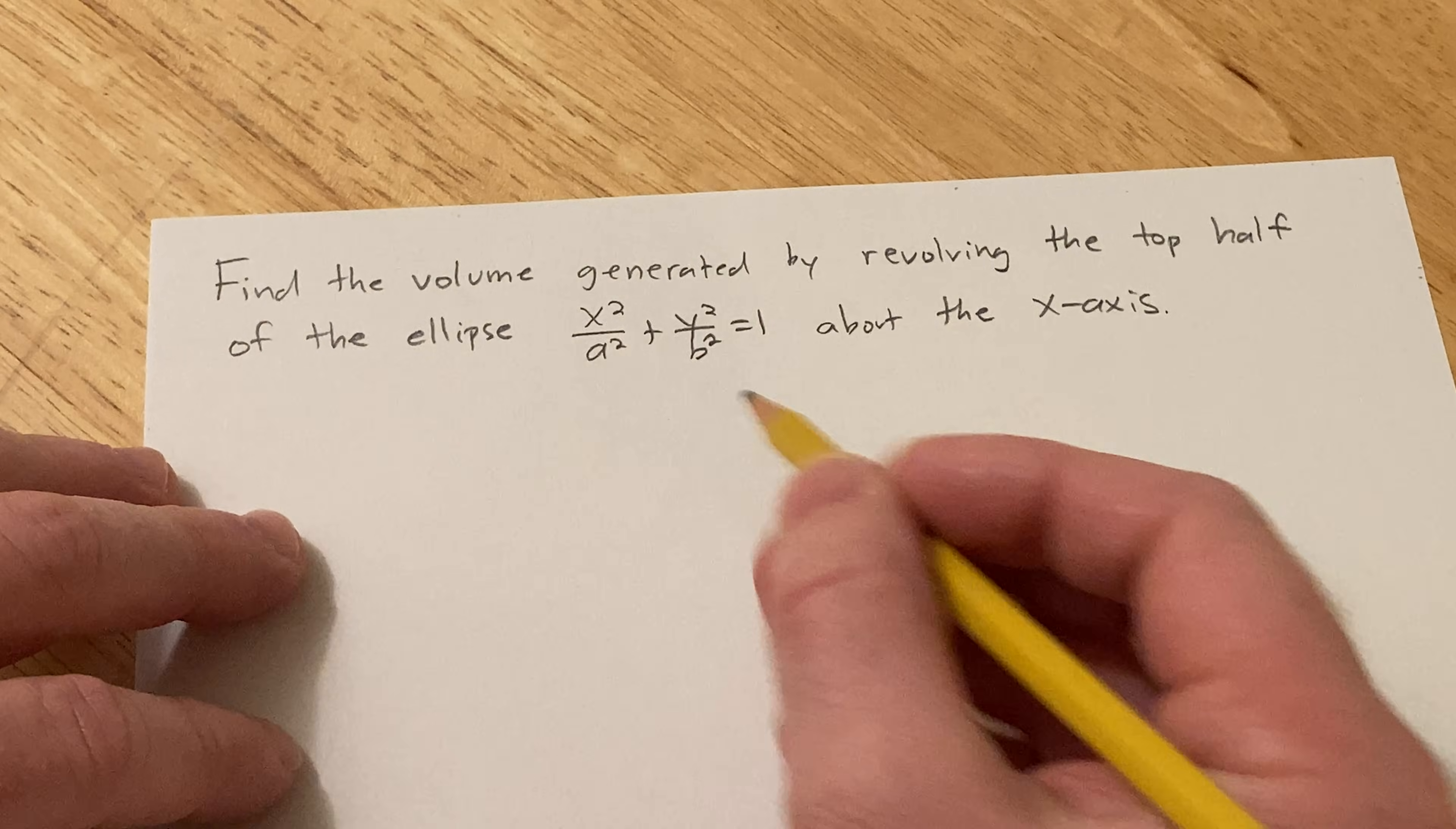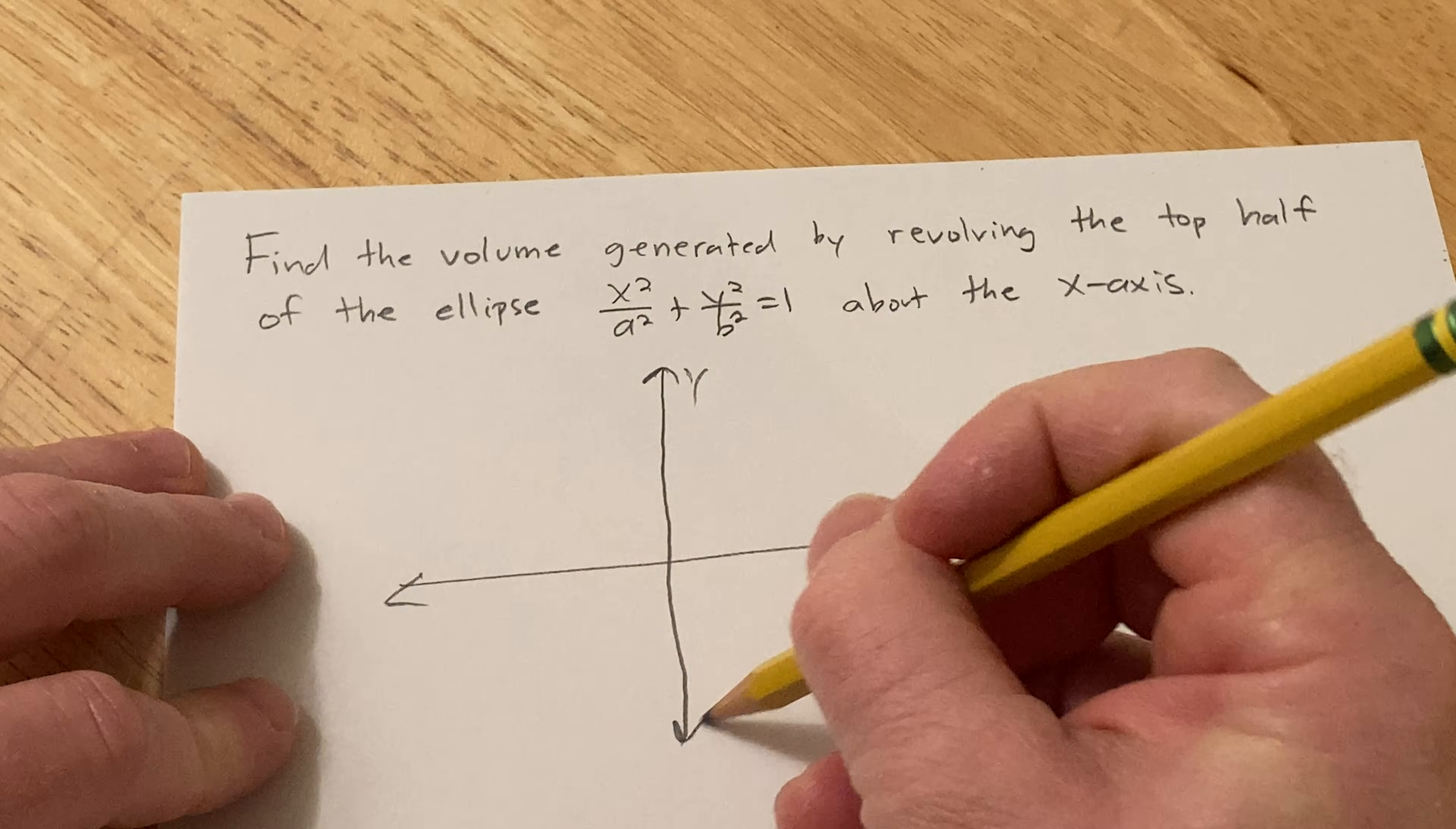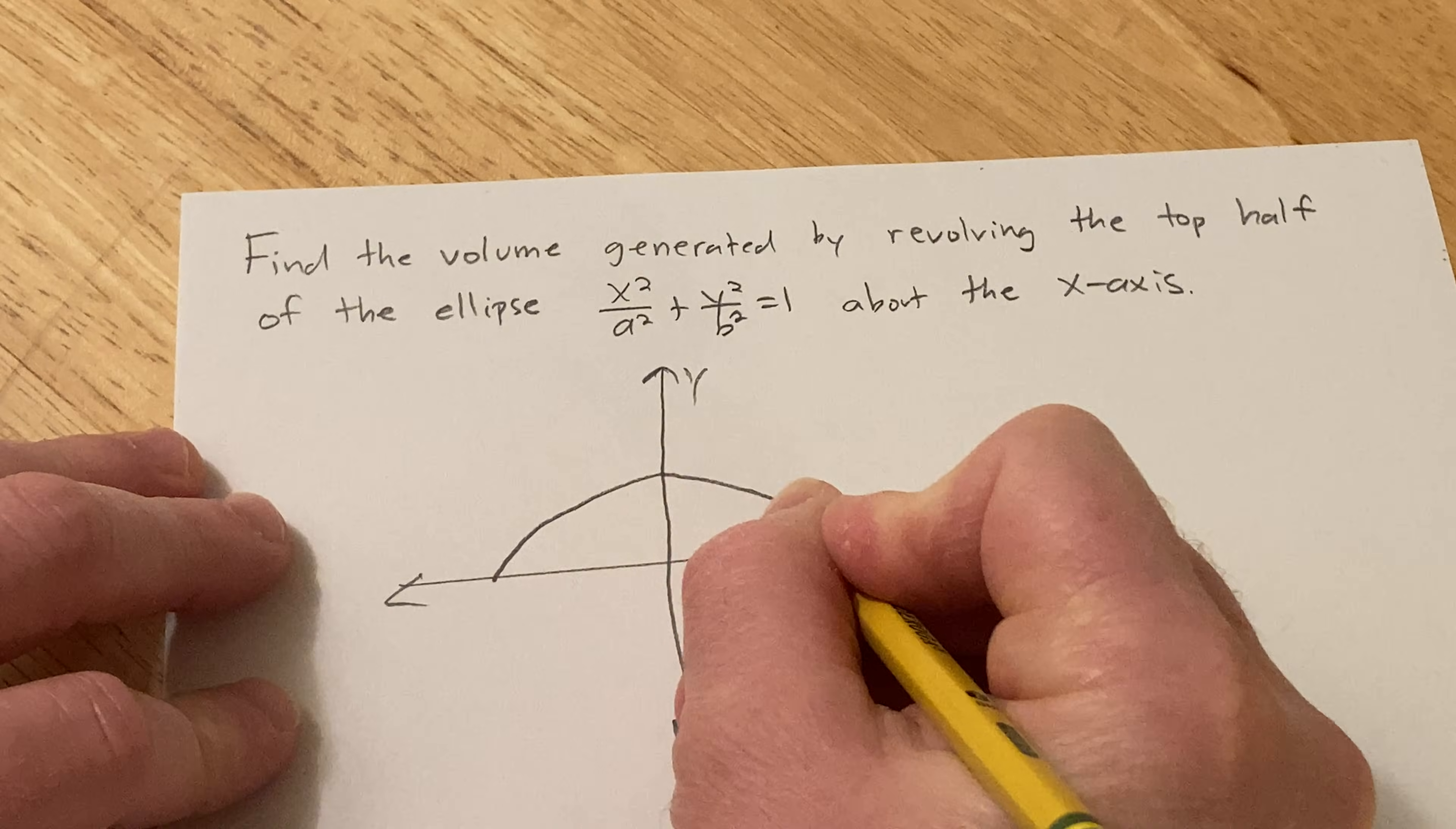So let's go ahead and work it out. Let's draw a little picture here. So here's the y-axis, here's the x-axis. And in an ellipse, a is always bigger than b, so it's probably going to look something like this. This is the top half of an ellipse.